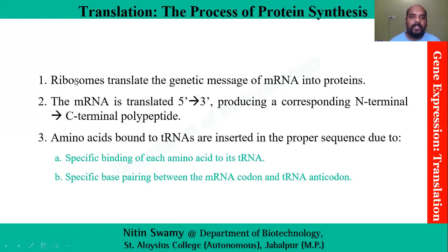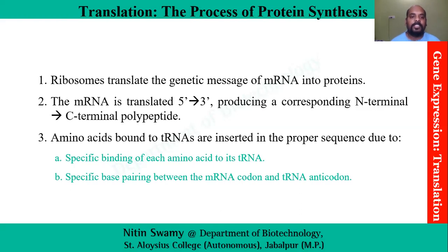In this process, ribosomes translate the genetic message of RNA into protein, and the mRNA is translated in the 5' to 3' direction, corresponding to N- to C-terminal polypeptides. Amino acids bound to tRNA are inserted in the proper sequence due to specific binding of each amino acid to its tRNA and specific base pairing between the mRNA codon and tRNA anticodon.